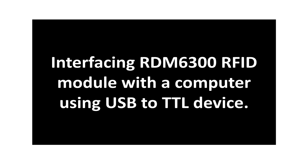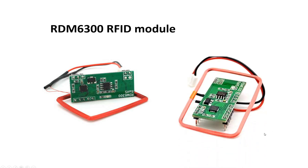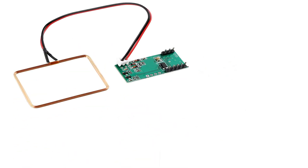We will see what output we get on the computer from this device and write code accordingly for the PIC. For the USB2TTL device, you can use any USB2TTL device — it can be CH340, FT232, CP2102, or any device available to you. Now let's get started. This is our RDM 6300 RFID module. It comes with an antenna. The good thing is you do not have to rub the card on the module — you just pass the card in front of the antenna and it is detected by the module.